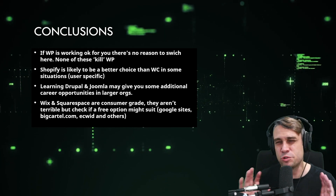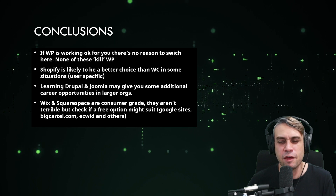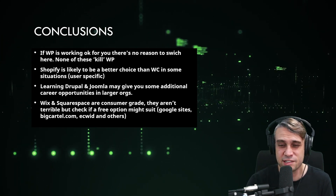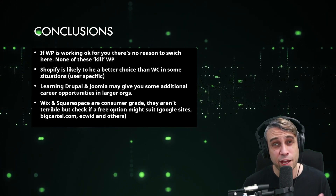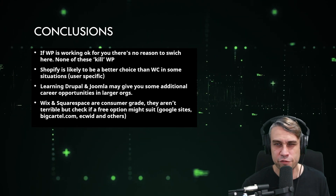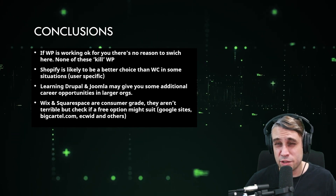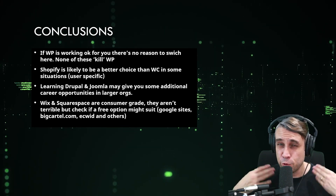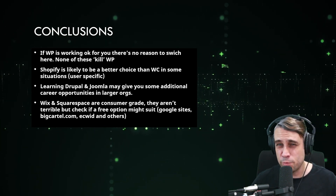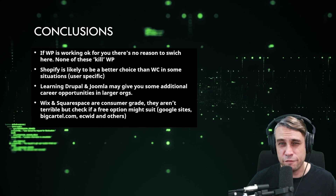Finally, Wix and Squarespace are consumer grade — I'd seldomly recommend them. Check if a free option might actually do the job for you. If you're seriously looking at Wix or Squarespace, check out something like Google Sites, Big Cartel, or Ecwid. You can often get a pretty good result for free if you're planning to sign up for Wix or Squarespace. Make sure you do your homework. Wix, Squarespace, and Shopify probably got to where they are through very good influencer marketing rather than necessarily being the best product for your use case.